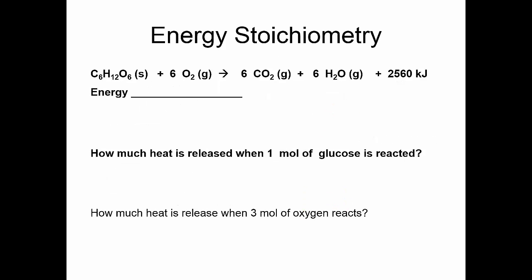That means energy can be part of reactions. There are a couple of different ways we're going to see it. Here's the arrow — heat is a product, it is produced. Another way we would write it: negative 250 kilojoules. Remember, KJ means kilojoules, because joules is your energy unit.